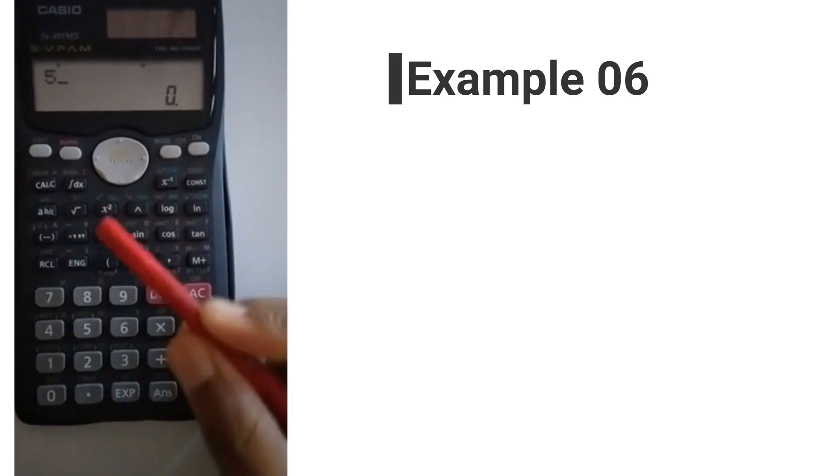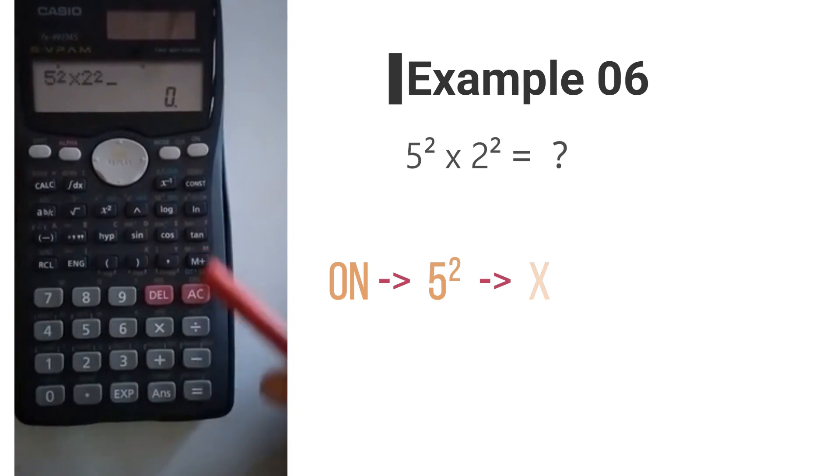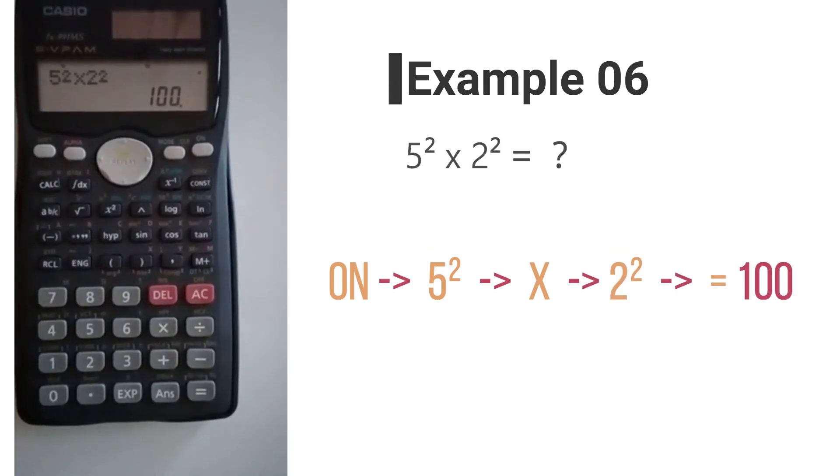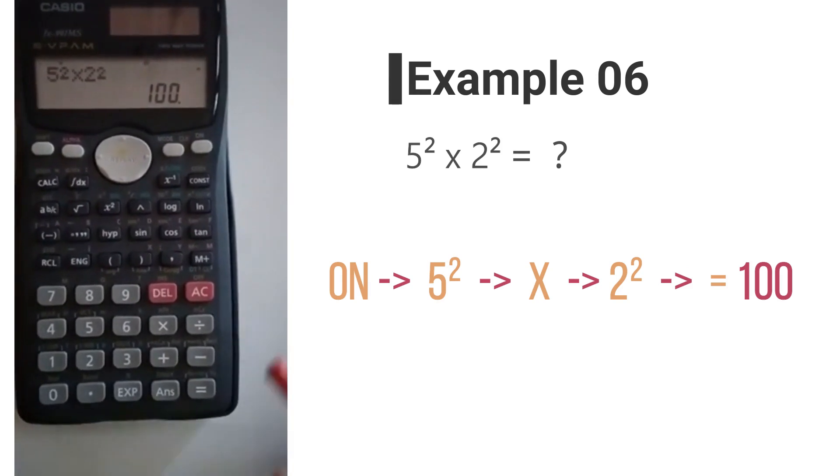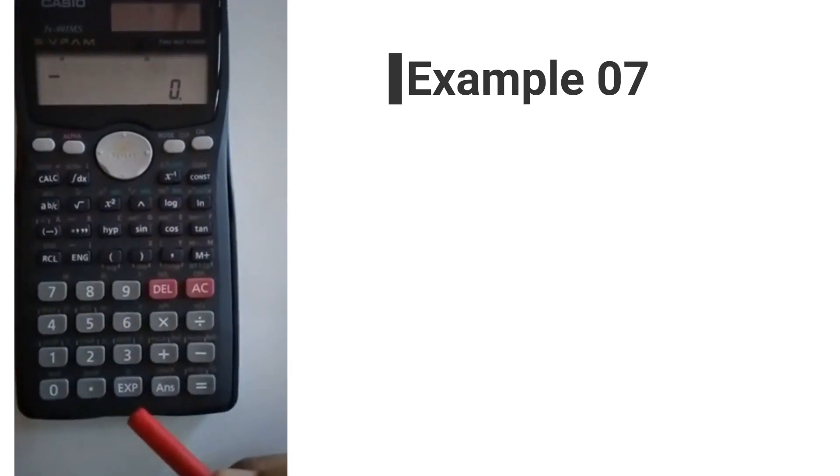example: 5 squared multiplied by 2 squared gives you 100. So this says square of 5 into square of 2 is equal to 100. The next example is related to the square root. If you need to find the square